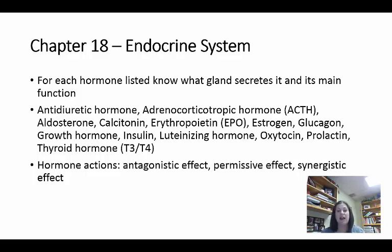Adrenocorticotropic hormone, abbreviated ACTH, is released by the anterior pituitary. Its purpose is to stimulate the secretion of hormones by the adrenal cortex — it goes and tells the adrenal cortex to release its particular hormones in different situations.